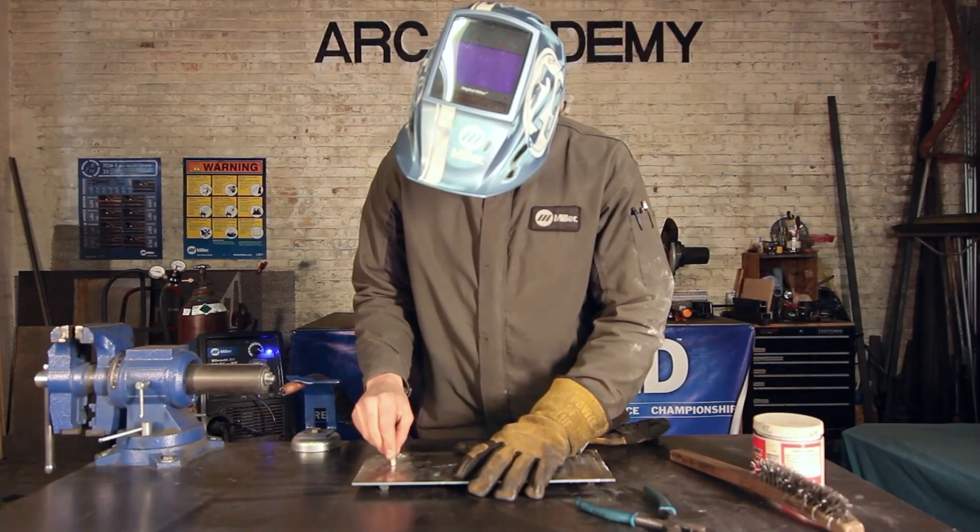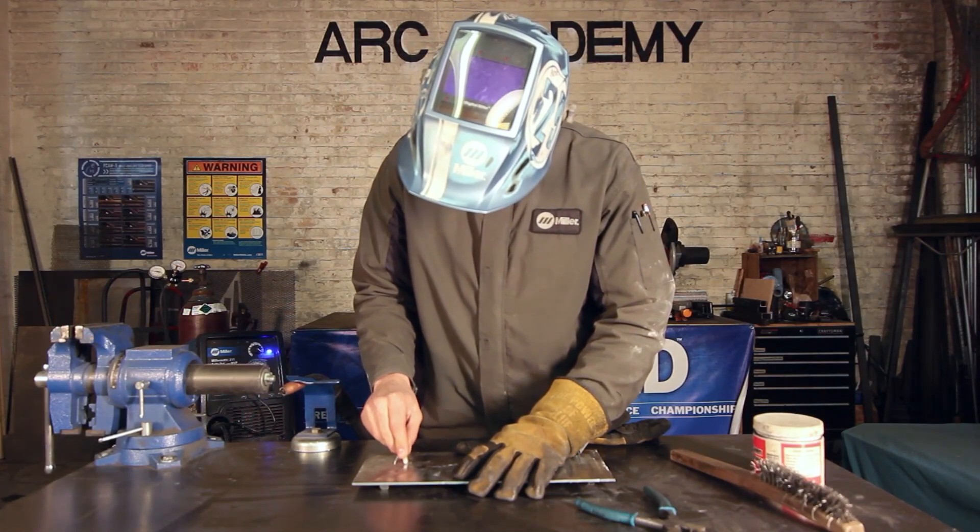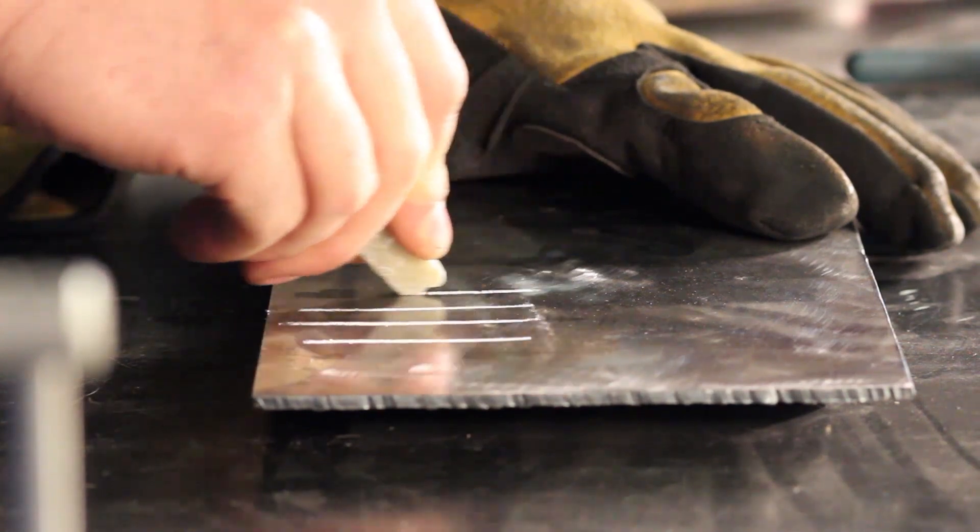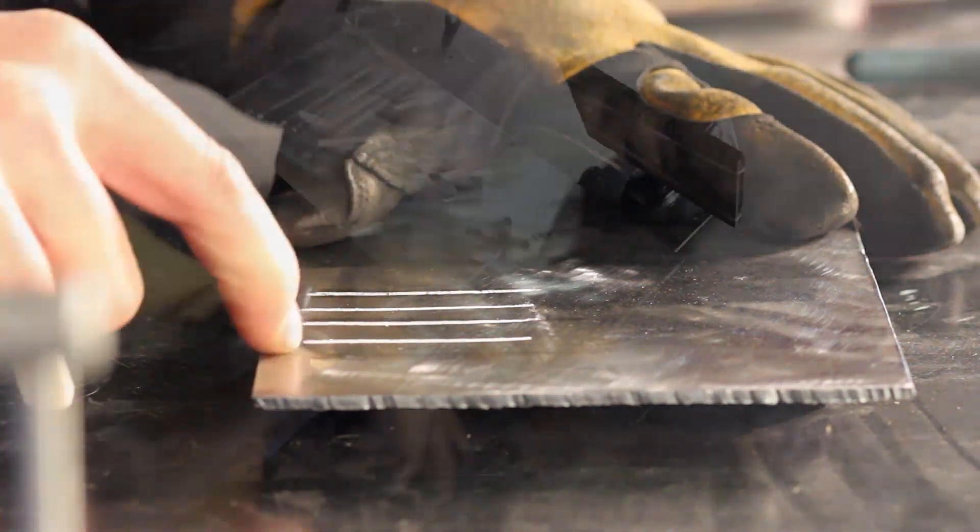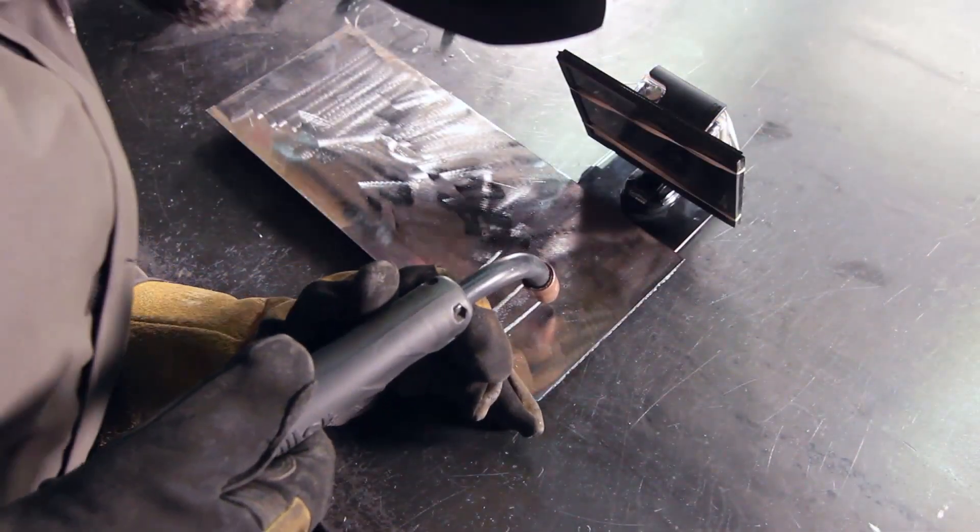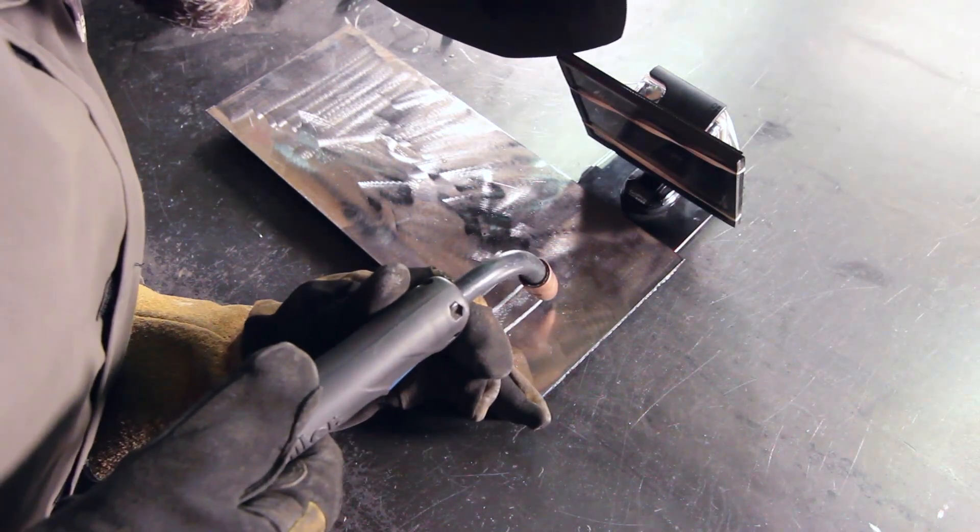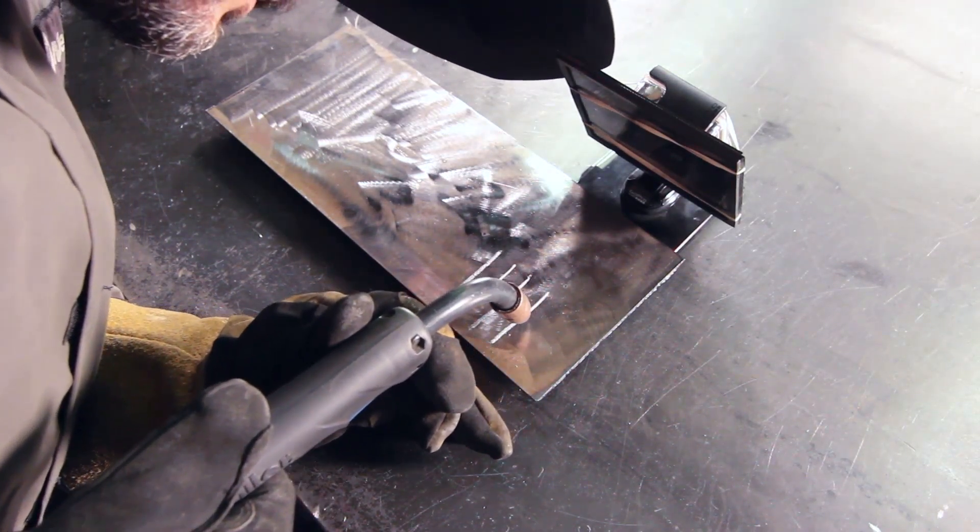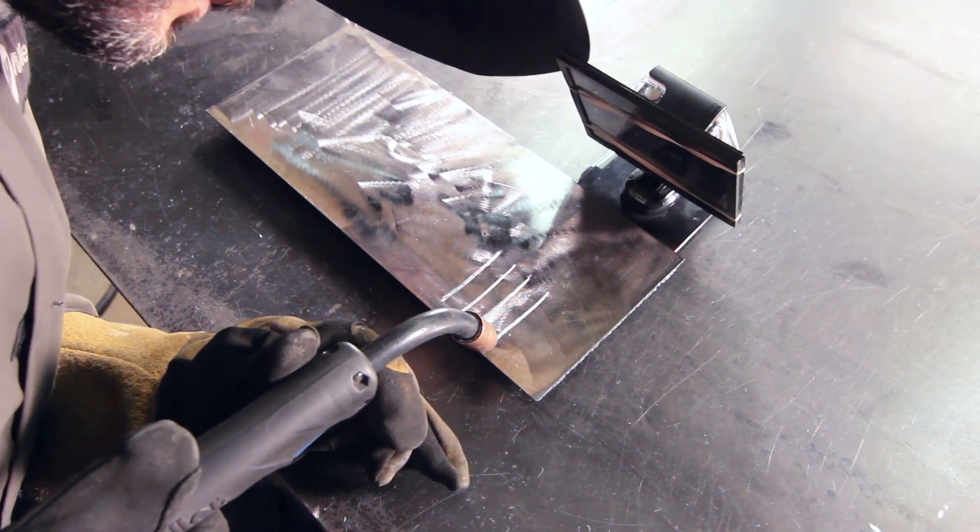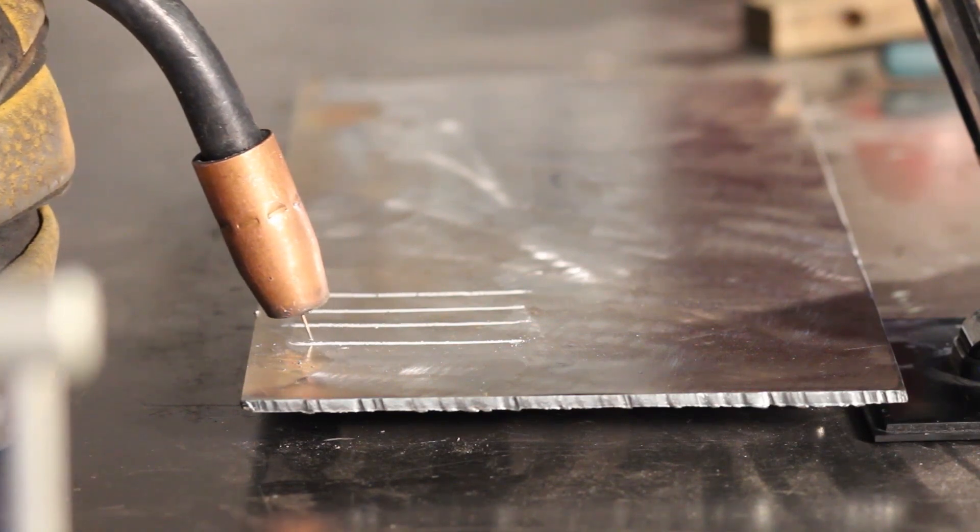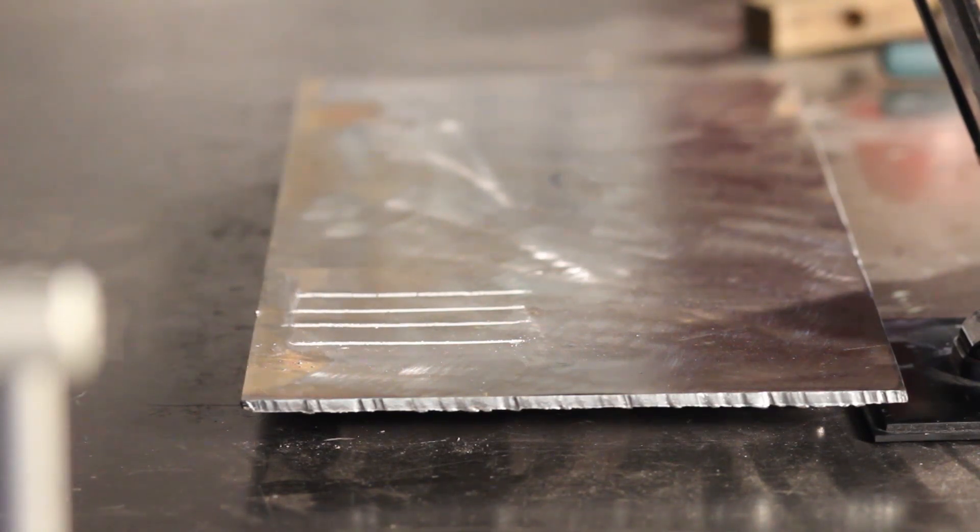For the first exercise, after you put your lines down, we want to practice to develop vision and muscle memory before we go live. With the machine off and your hood up, let's practice a little bit. Try to see an eighth of an inch of your wire off to the side under your nozzle and develop your travel speed while the machine is off.